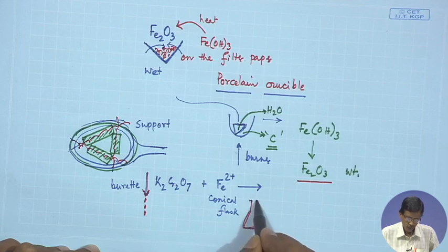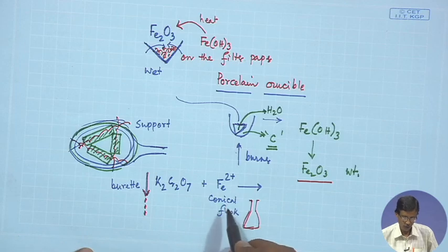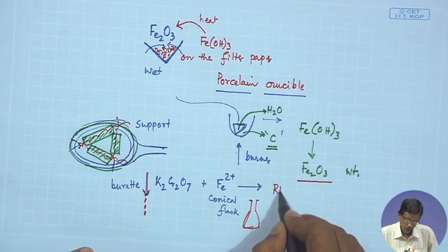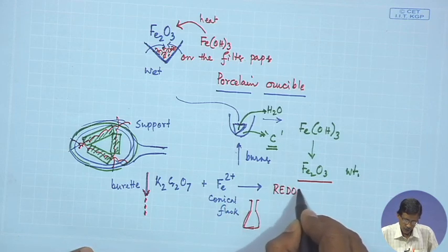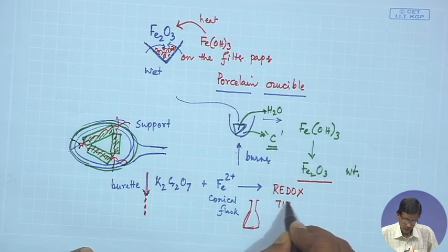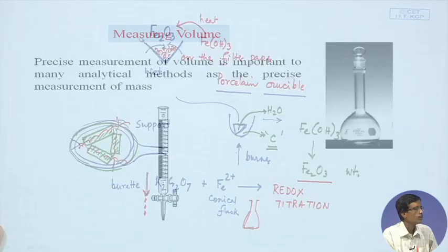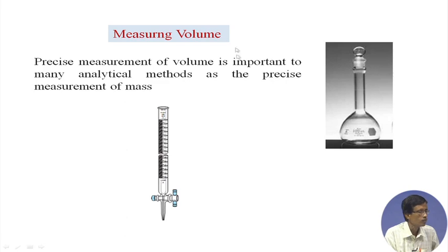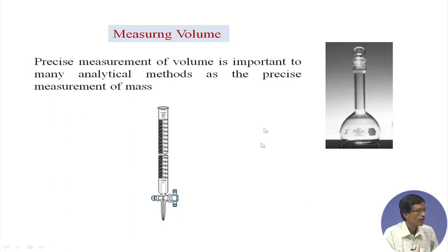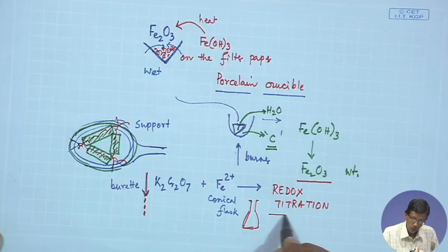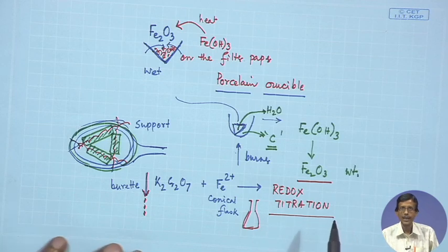We drop by drop add the K₂Cr₂O₇ solution to the iron solution in the conical flask. This is the apparatus and solution for your redox titration. Next we will see how the measurement of these volumes is important because volumes are directly proportional to the mass of the solid taken in the volumetric flask as well as in the burette, and how we can go for the corresponding volumetric analysis by redox titration.